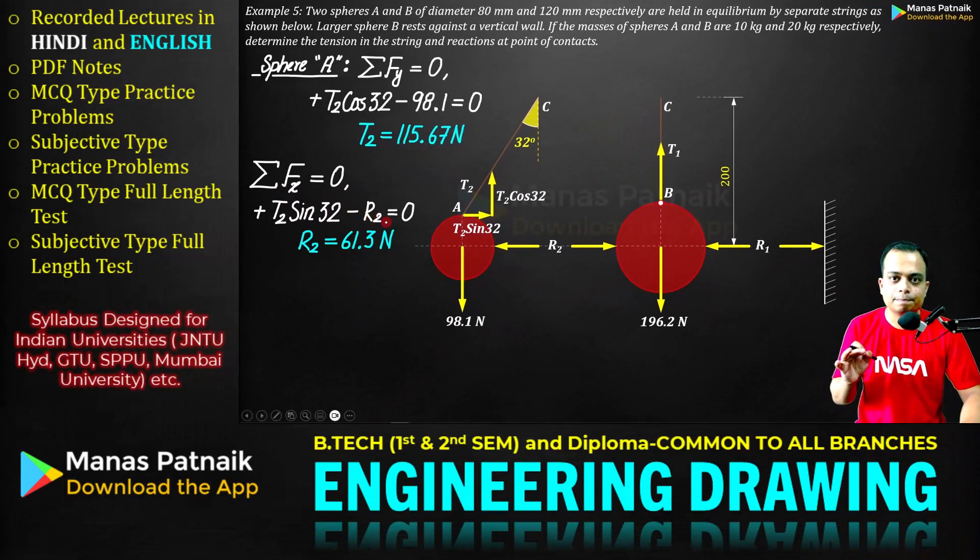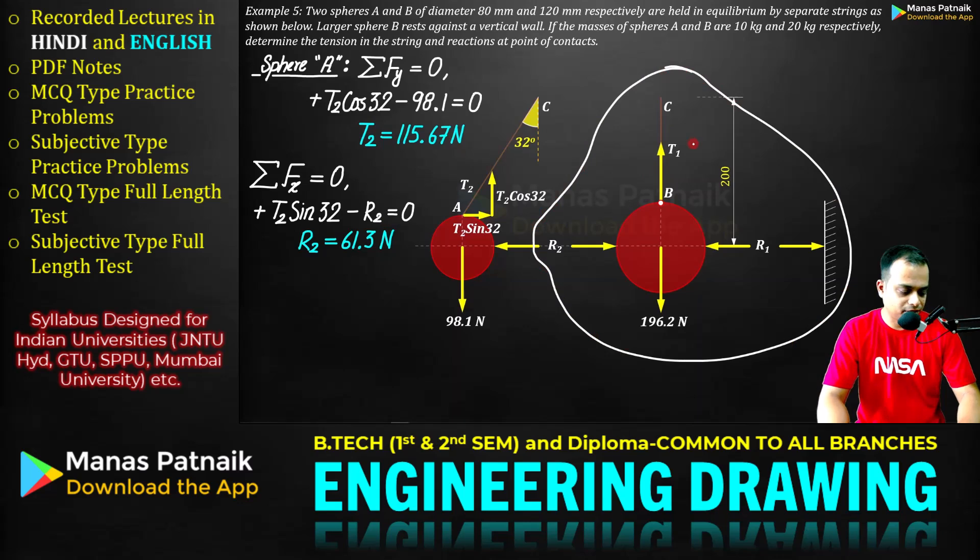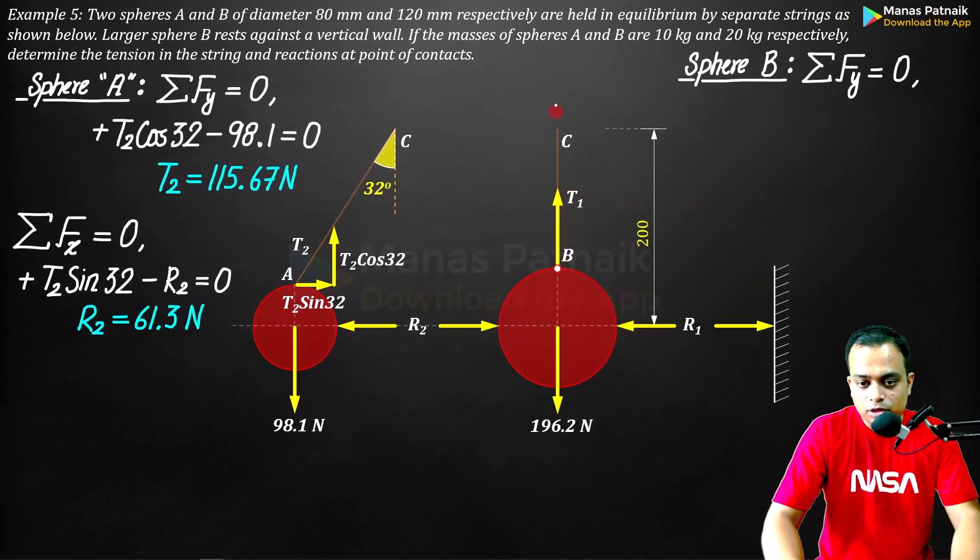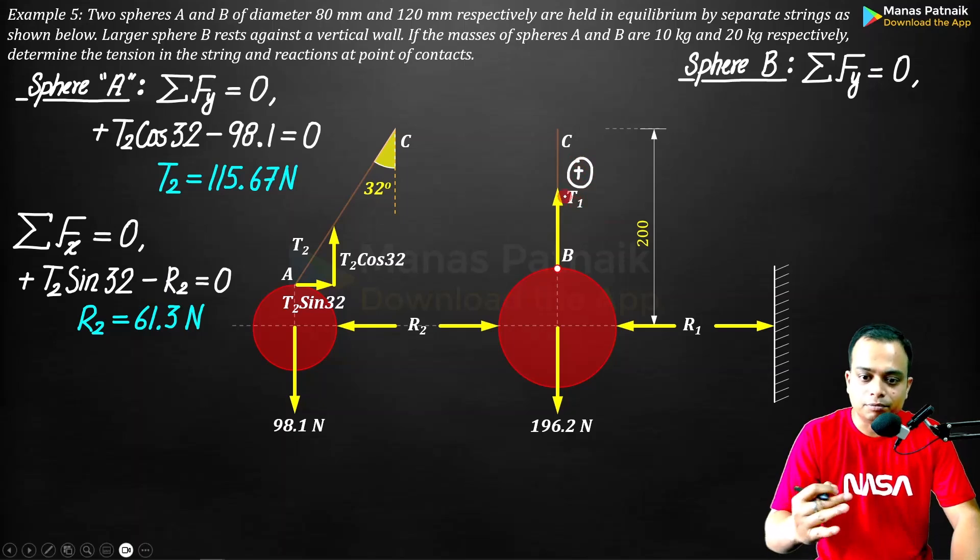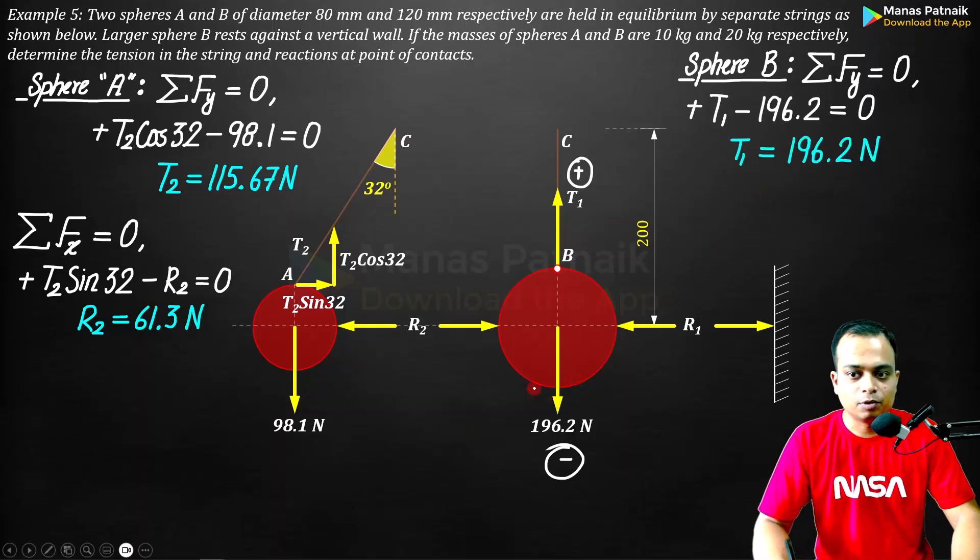Now let's observe the free body of sphere B. I'll go for summation Fy equals zero. Along the y direction I've got force T1 positive since it's upwards, 196.2 negative downwards. Solve for T1, you get 196.2 Newtons.